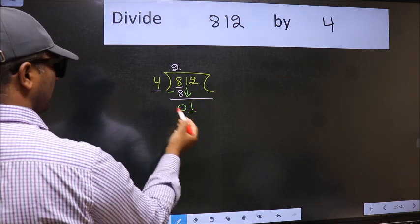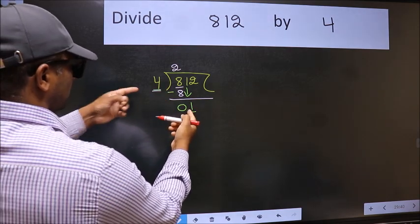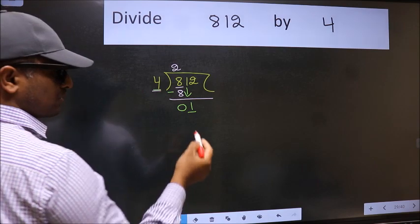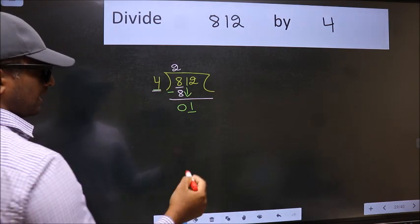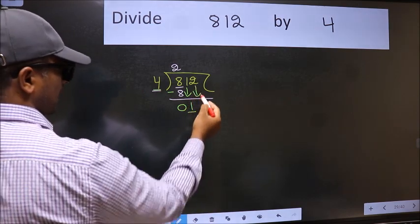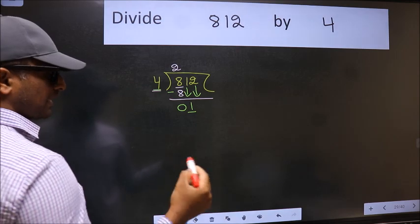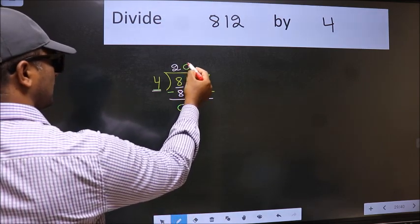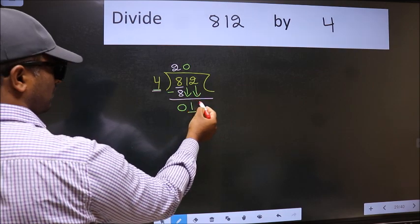Now here we have 1 and here 4. 1 is smaller than 4. So we should bring down the second number. And the rule to bring down the second number is we should put 0 here. Then only we can bring this number down.